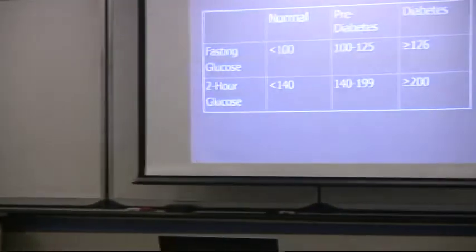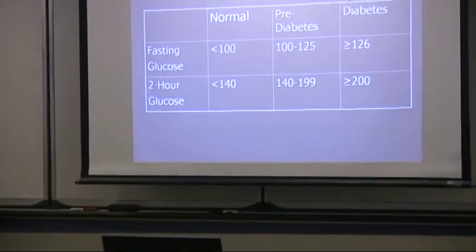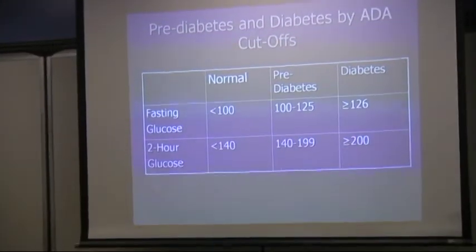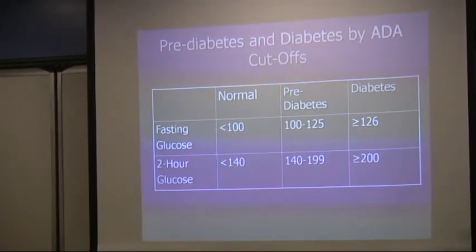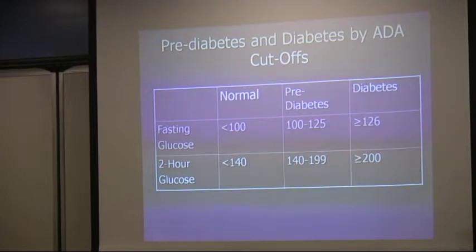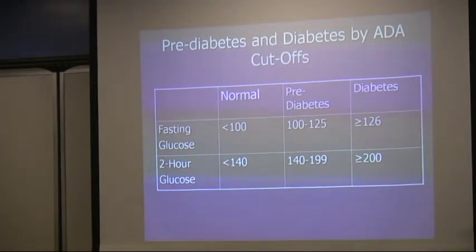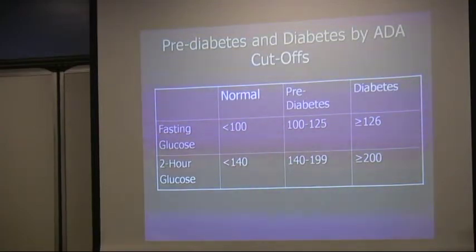These are the ADA cutoff levels for glucose measurements, very similar to the fasting and post-prandial levels shown earlier. At 2 hours after an oral glucose tolerance test: diabetes is defined by a fasting level of 126 or higher and a 2-hour post-glucose load of 200 or higher, with the same normative data for pre-diabetes and normal fasting glucose.